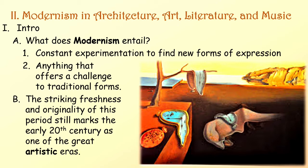What does modernism entail? Number one, constant experimentation to find new forms of expression. And number two, it entails anything that offers a challenge to traditional forms. The striking freshness and originality of this period still marks the early 20th century as one of the great artistic eras.